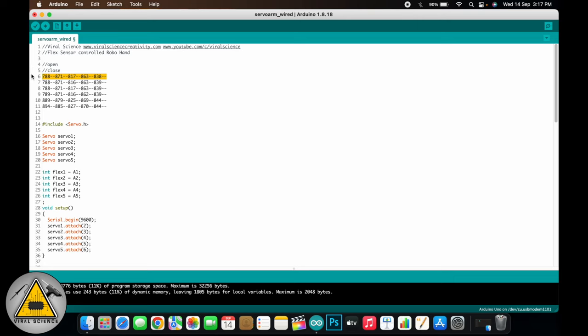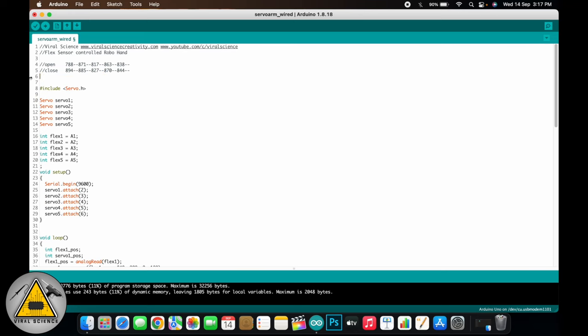So from this, we'll take the first reading when the hand was open and we'll take the last reading when the hand was closed. So I've just put it in the comments for my reference. So here we have noted the minimum and the maximum values of the flex sensors when hand is open and closed.